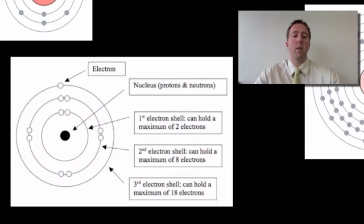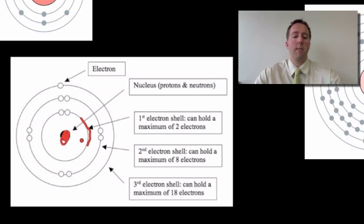In this diagram, here is the nucleus of an atom — this is where the protons and neutrons live. This is the first shell, the first energy level of this atom. This is actually an atom of sodium, and the first shell of all atoms can only hold a maximum of two electrons.